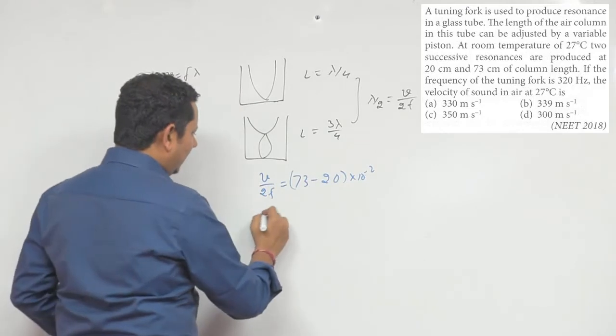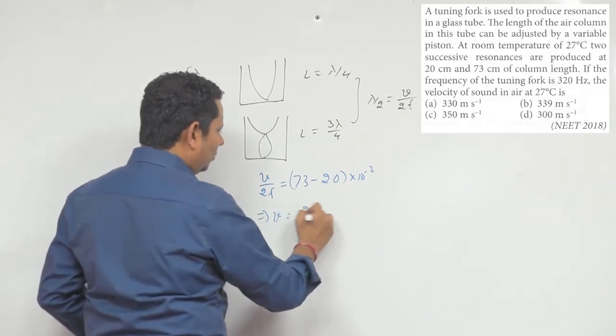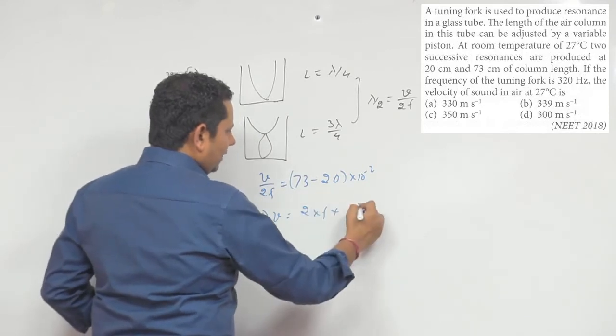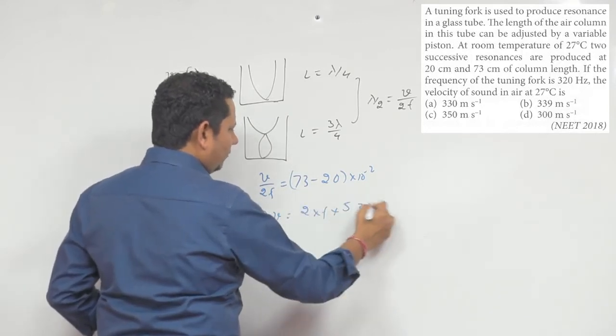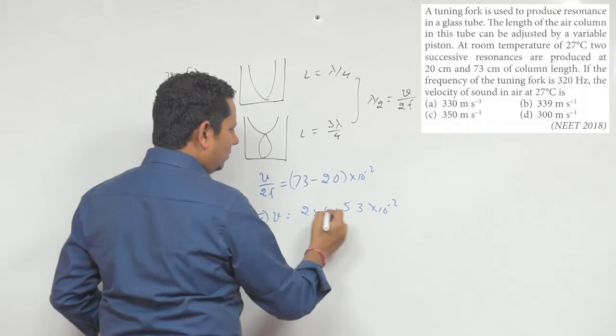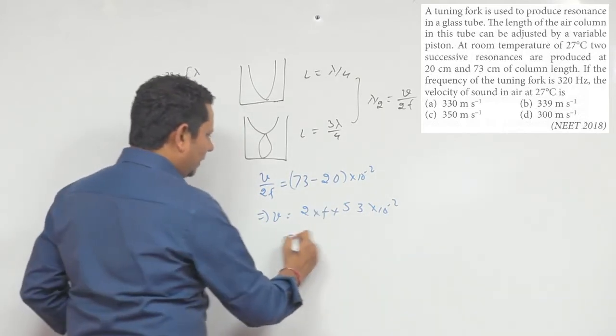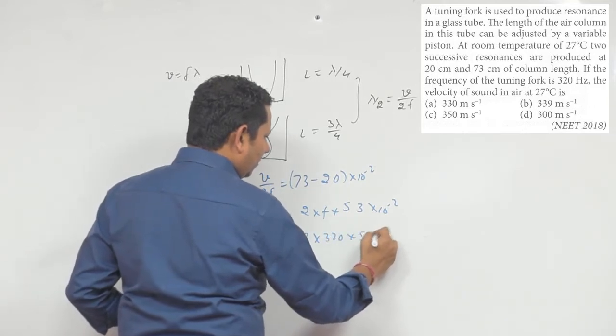This equals 2 multiplied by f multiplied by 53 multiplied by 10 to the power minus 2 meters. And f value here you have is 320, so v equals 2 multiplied by 320 multiplied by 53 multiplied by 10 to the power minus 2.